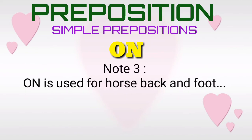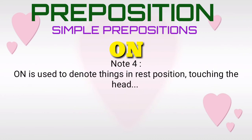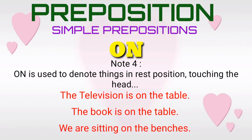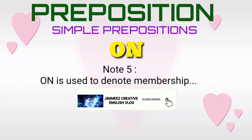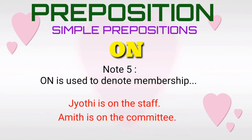Note three. The simple preposition 'on' is used for horseback and on foot. For example: 'He goes to the office on foot.' Note four. The simple preposition 'on' is used to denote things in rest position touching a surface. Note five. The simple preposition 'on' is used to denote membership. For example: 'Jyothi is on the staff.' 'Amit is on the committee.' Here the simple preposition 'on' is used to denote membership.